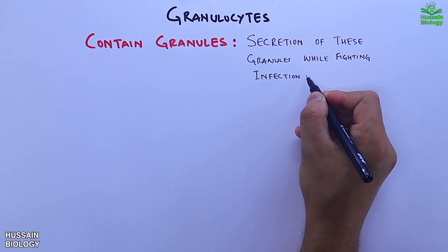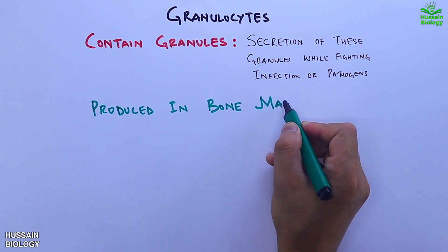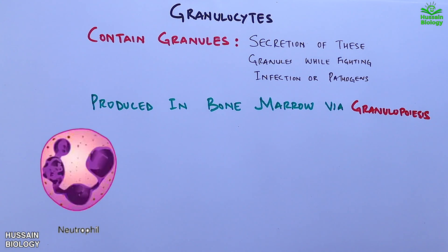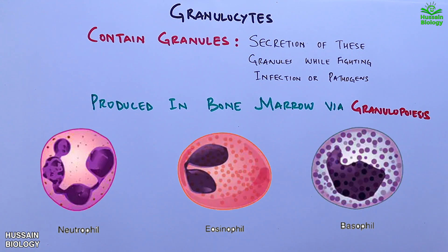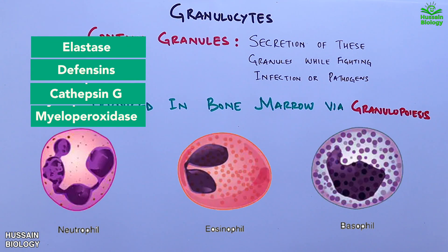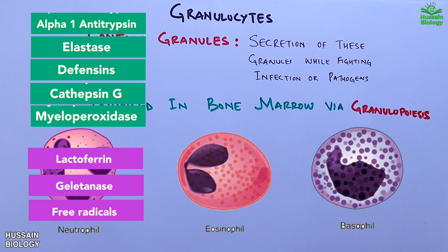Granulocytes are produced in bone marrow via granulopoiesis. There are three types: neutrophil, eosinophil, and basophil. Neutrophil azurophilic or primary granules contain myeloperoxidase, cathepsin G, defensins, elastase, proteinase, and alpha-1 antitrypsin, whereas secondary or specific granules secrete lactoferrin, antibacterial substances, gelatinase, and free radicals. Neutrophils are highly phagocytic and hypermotile in nature.